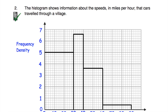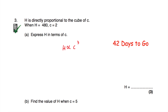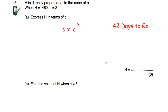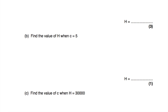Question number three is on direct proportion. H is directly proportional to the cube of C, and when H equals 480, C equals 2. We've been asked to express H in terms of C. Write that H is proportional to C cubed, replace the proportional symbol with K (the constant of proportionality), use the given values to find K, and then express H in terms of C. For part B, substitute C equals 5 into your answer from part A. For part C, use that equation with H equals 30,000 to find C. We covered direct proportion 42 days ago.